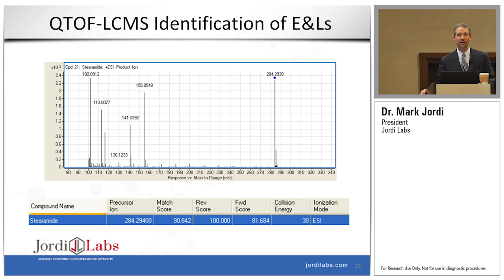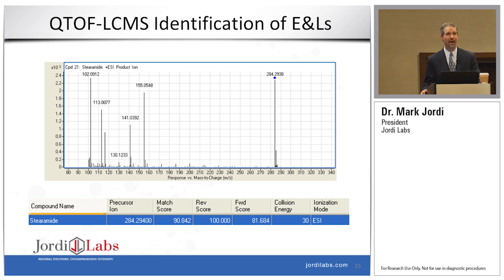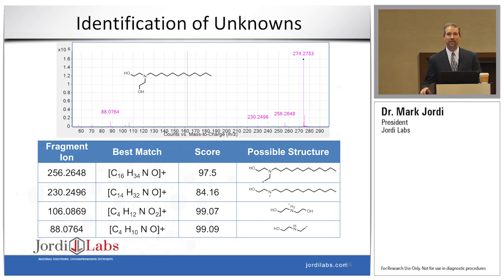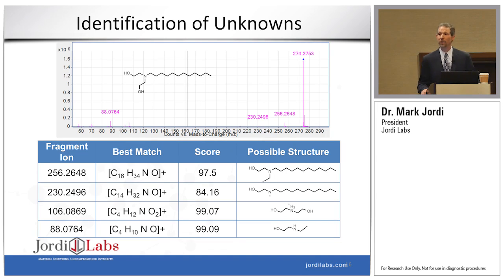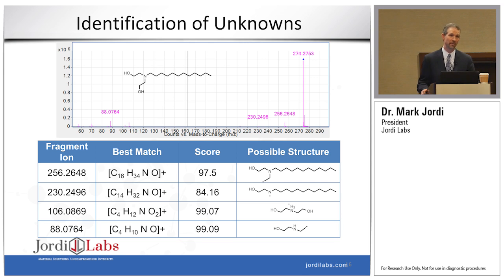Here is one example of the kind of data we obtain — a MS-MS spectrum obtained on an unknown from a plastic that we extracted. We compared this with our internal libraries and got a good match for Staramid, so we were able to identify that this is a slip agent coming off of the plastic. In another example, we obtained no match in either our database or a commercial database, so we manually deconvoluted the MS-MS spectrum after doing molecular formula generation, and by looking at the fragments, we were able to get back to a confident identification for that particular unknown.